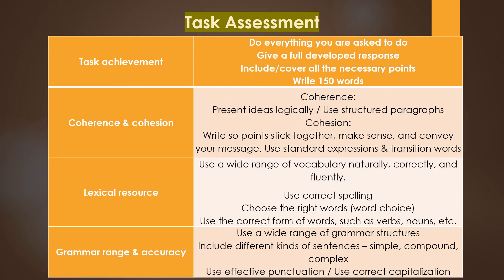Let's take a look at the task assessments. Task achievement is 25%, in which you need to answer everything you're asked to do in the question. The other 25% belongs to coherence and cohesion — use structured paragraphs and mixed linking expressions. The other 25% is lexical resource — use a wide range of vocabulary. And the last is grammar range and accuracy: make sure you include different kinds of sentences ranging from simple, compound, and complex.